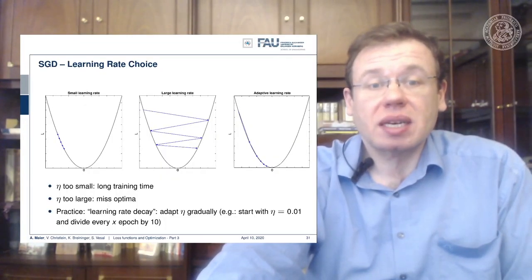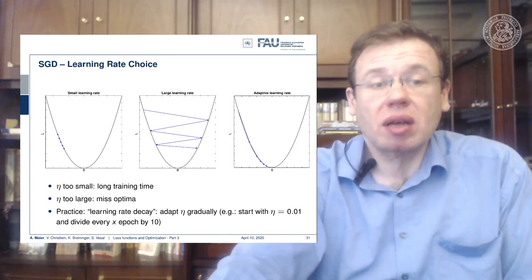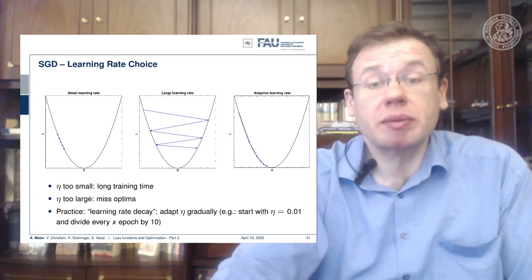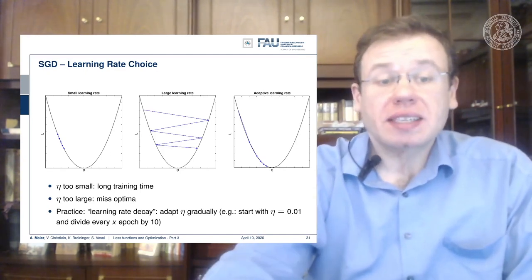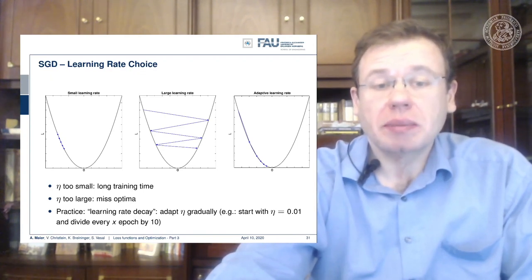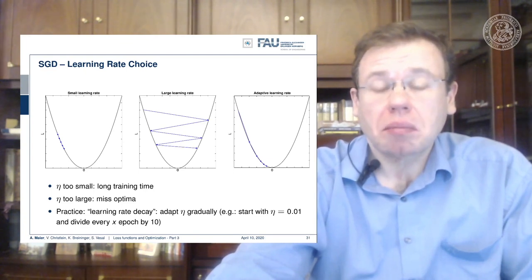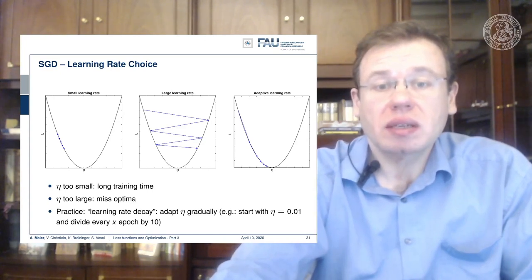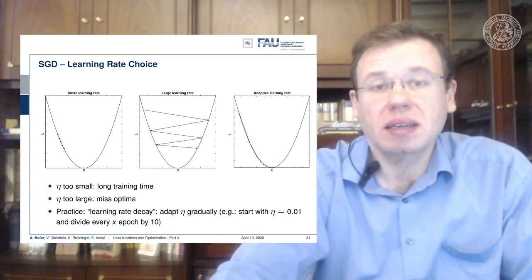Let's have a look at the choice of ETA. If you have a small learning rate, we may stop even before reaching convergence. If you have a too large learning rate, we might end up jumping back and forth without finding the local minimum. Only with the appropriate learning rate will you find your minimum. When you are far from the minimum you want to make big steps, and as you get closer the steps should get smaller. In practice, you work with decay of the learning rate — you adapt ETA gradually, starting at say 0.01 and dividing by 10 every x epochs. This helps you arrive at a decaying learning rate so you don't miss the local minimum.